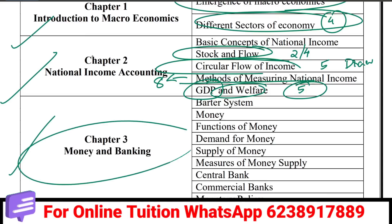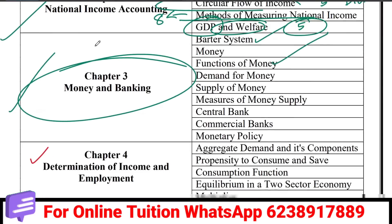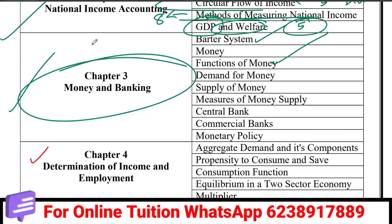Chapter 3: Money and Banking. We are going to go to the barter system, then money functions, then measures of money supply. There are three motives: the Transaction motive, the Precautionary motive, and the Speculative motive.